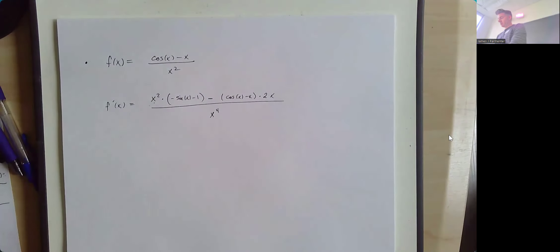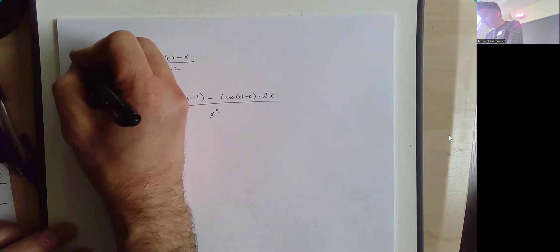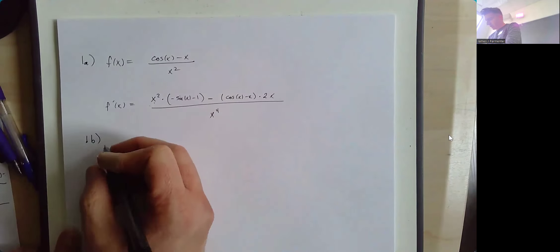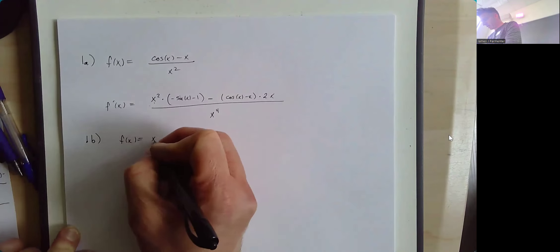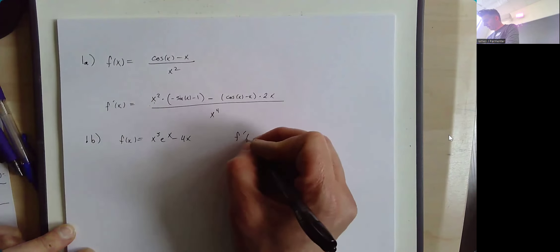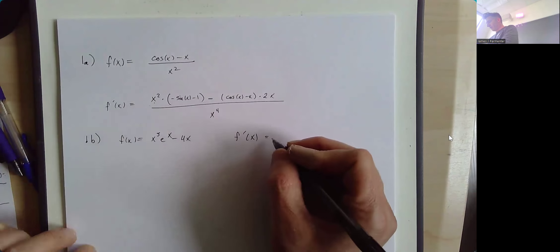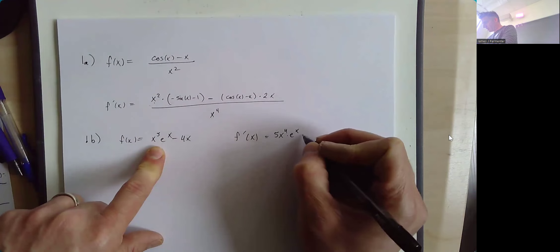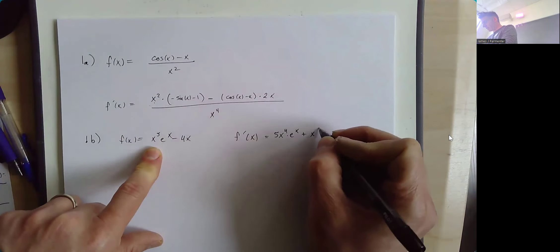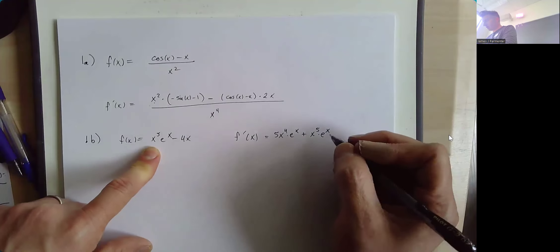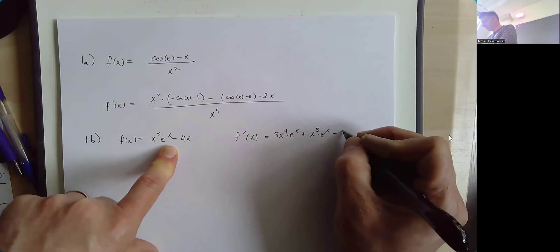Let's look at the next one. This is 1a and this is 1b. The function here is f of x equal to x to the fifth times e to the x minus 4x. For the derivative, we're going to use the product rule for x to the fifth times e to the x: that's 5x to the fourth times e to the x, plus x to the fifth times the derivative of e to the x — also known as e to the x — and then minus the derivative of 4x, which is 4.